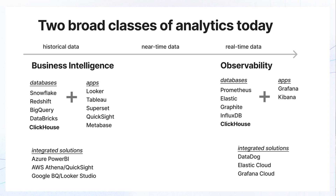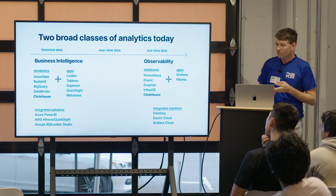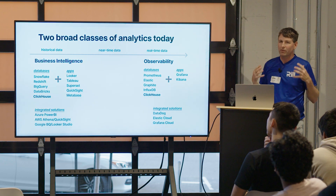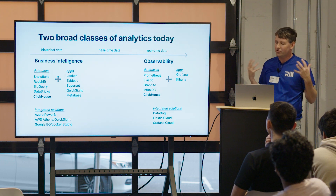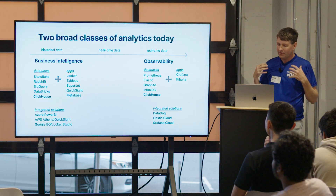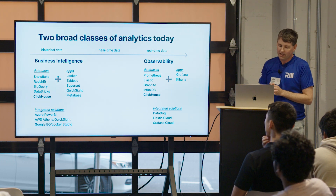Traditionally, observability tools are observing IT systems, but as we put microchips in everything, we're evolving to a place where we're not just observing servers — we're observing fleets of cars, we're observing payment transactions. Really, almost everything we do in the world has a mirror digital universe of signal that's getting tracked, and we need to observe that signal and collect it.